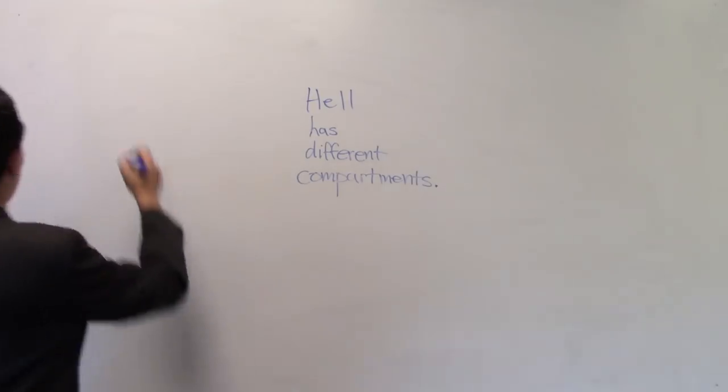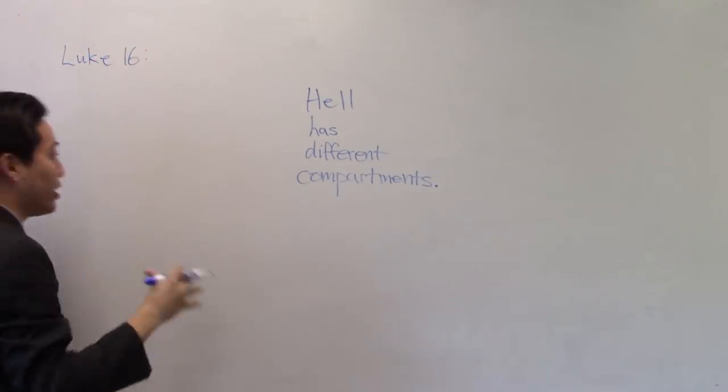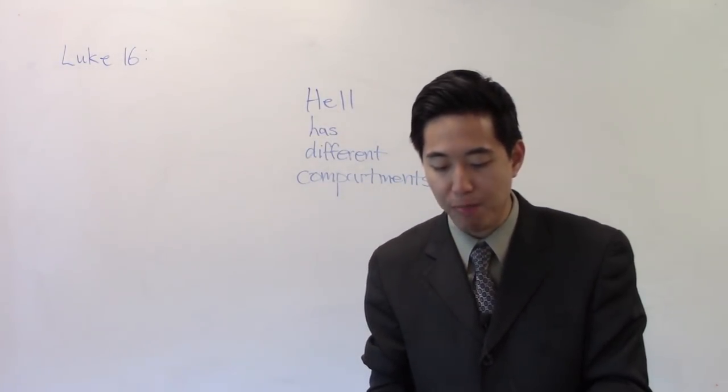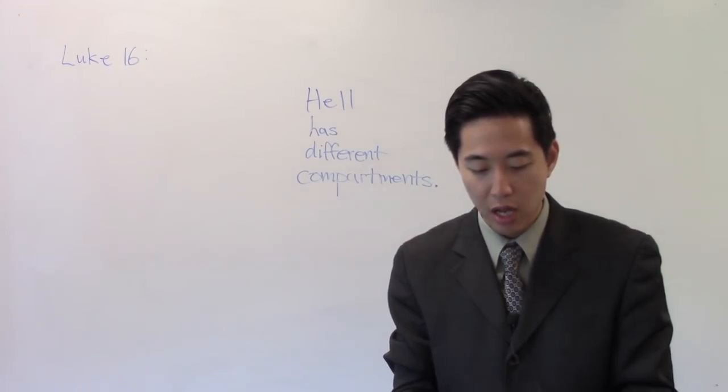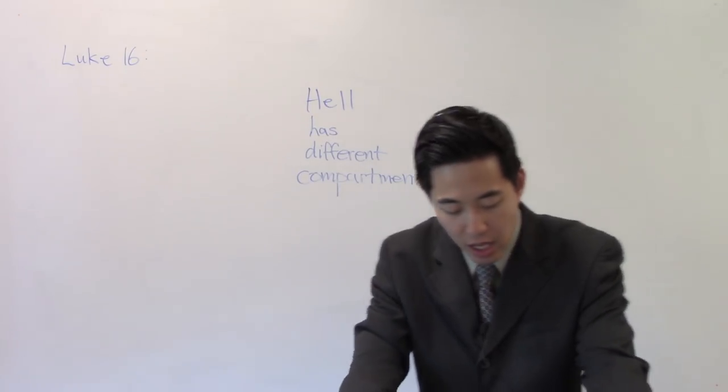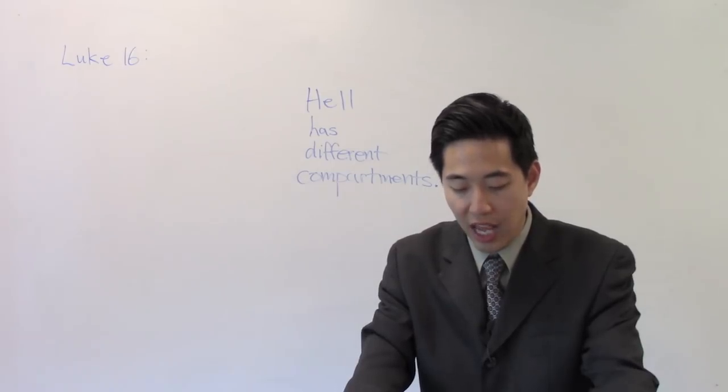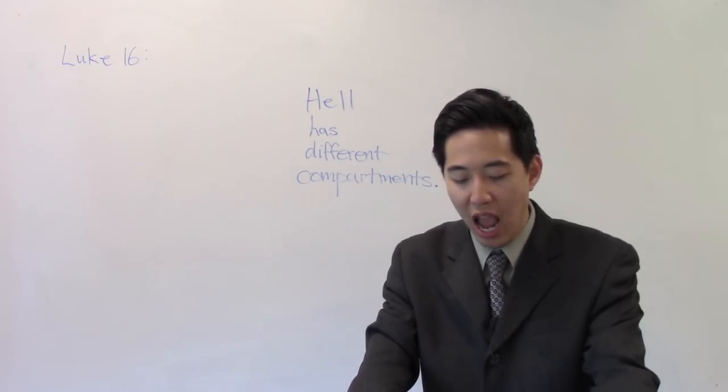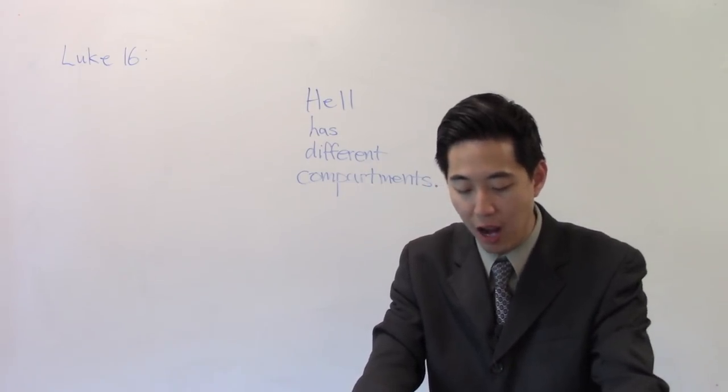I'm going to give you several cases right here. First is Luke chapter 16. There's undoubtedly different places in hell. We're going to look at the book of Luke chapter 16. There's a place of comfort and there's a place of torment. Notice the rich man is in a place of torment. Lazarus is in a place of comfort. Look at verse 22. And it came to pass that when the beggar died and was carried by the angels into where? Abraham's bosom. The rich man also died and was buried. So the rich man is at a different place. Lazarus is into Abraham's bosom.